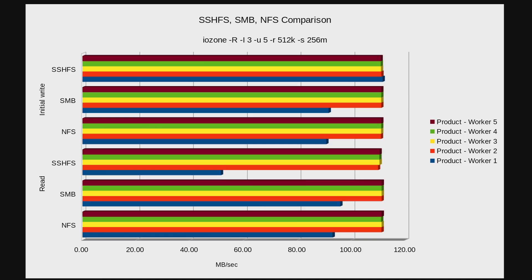SSHFS on the initial write was pegged. SMB also pegged except for the first workload, and the same for NFS — it pegged except for the first workload. So they're all about the same; it's not really a big difference there. In the read, SSHFS was quite a bit slower than the other two on the first workload, but the second, third, fourth, and fifth it was pegged. SMB was a little faster than NFS, but not by much — they all ran about the same speed once you get a number of users up and running on it.